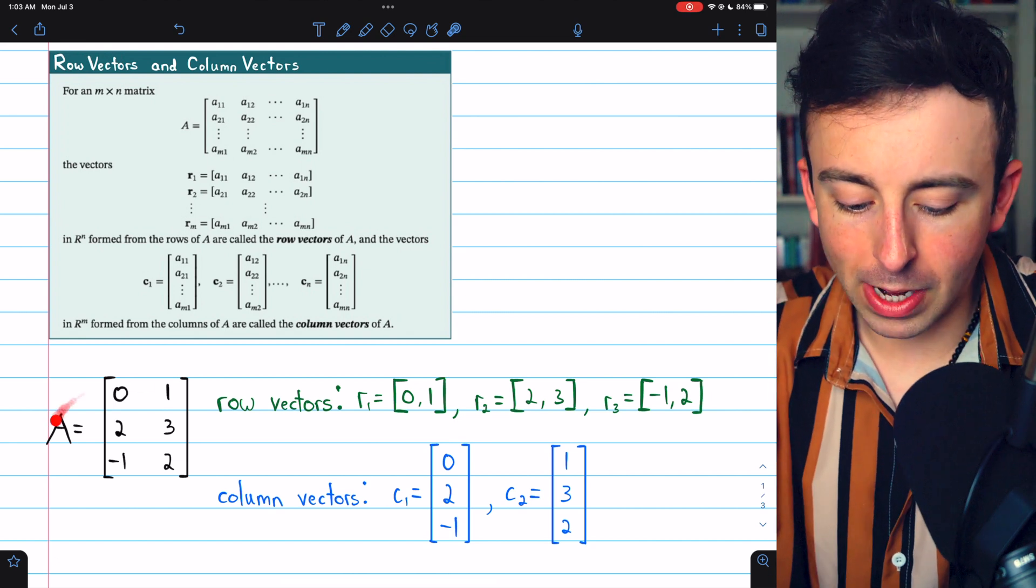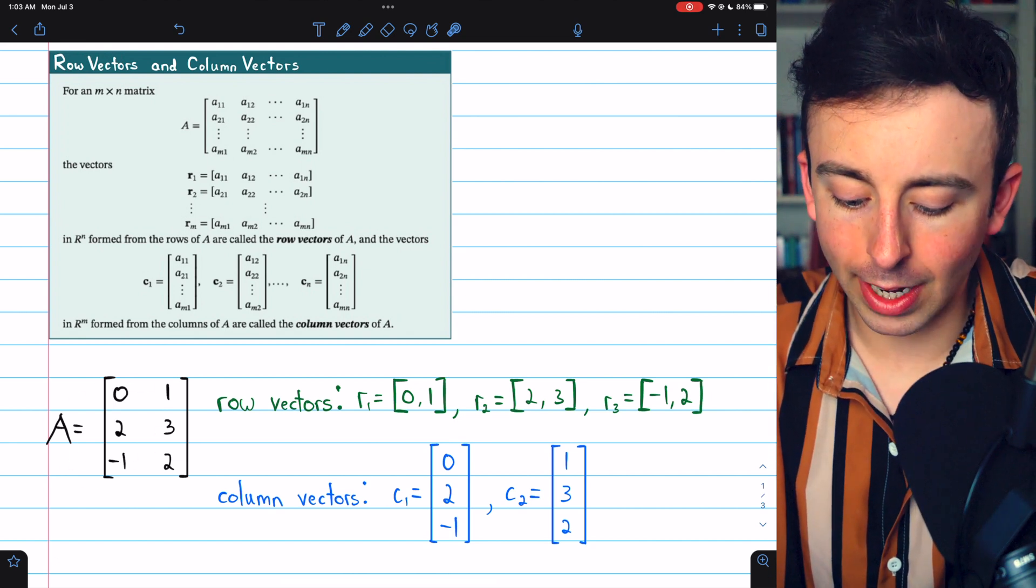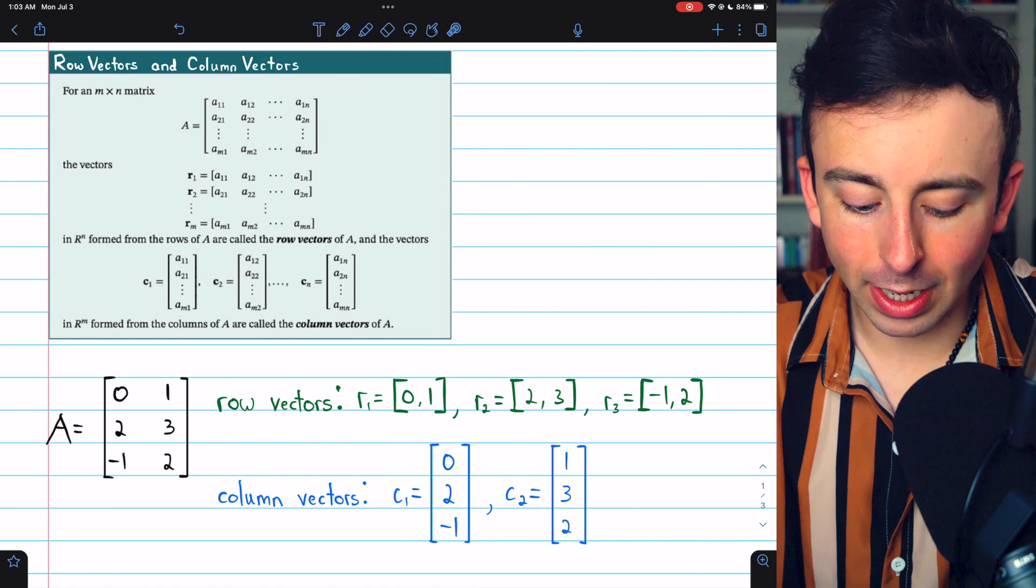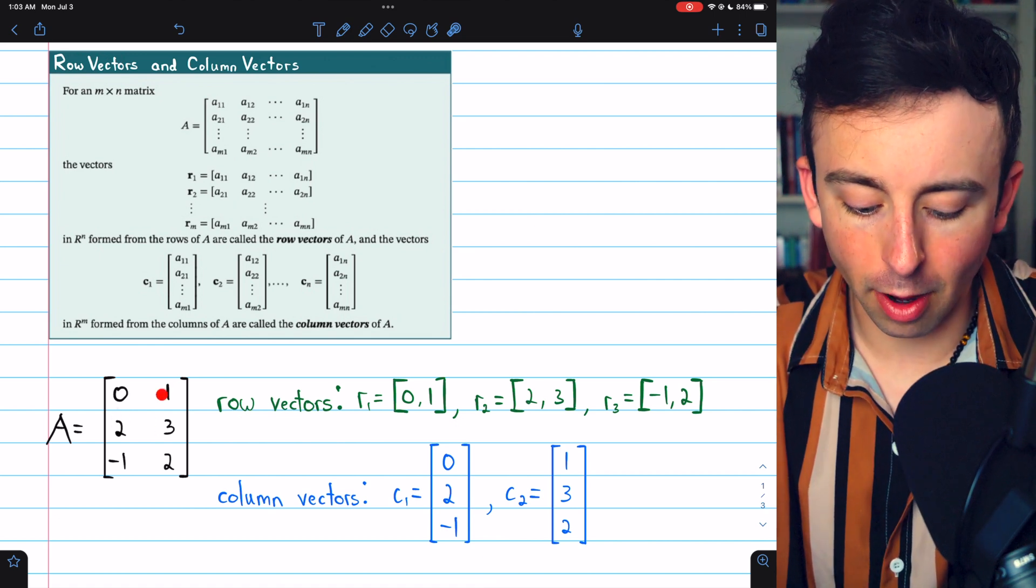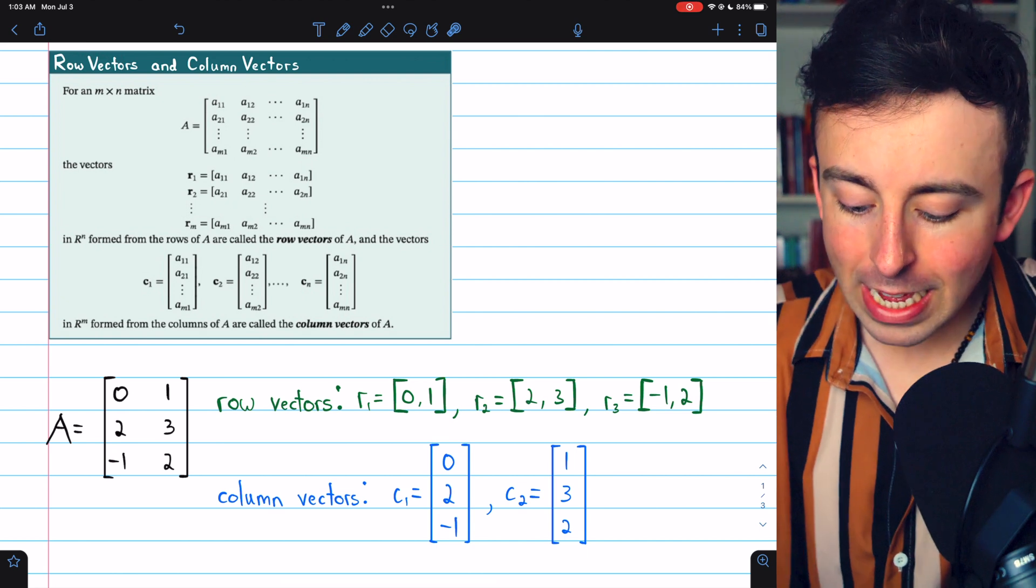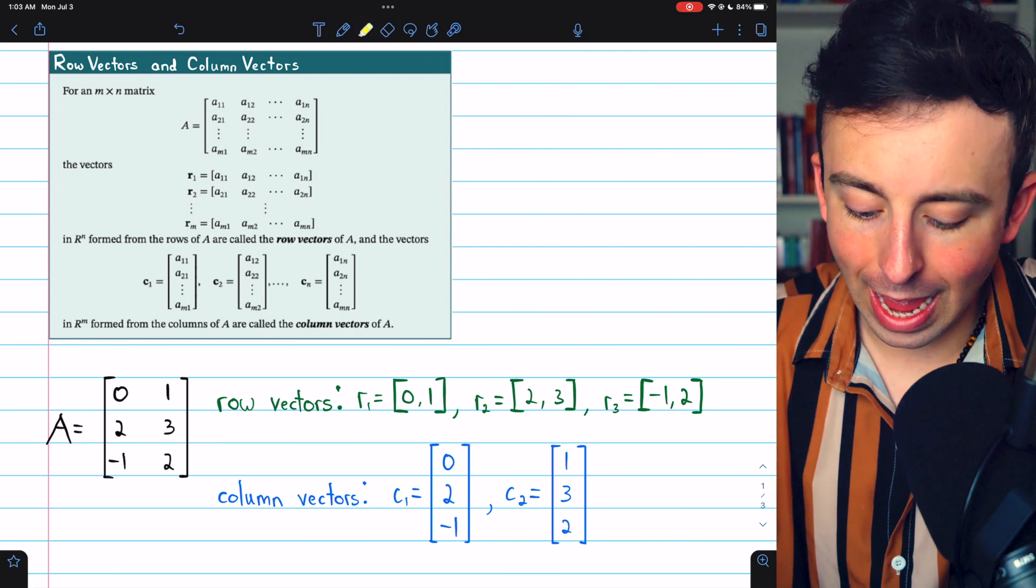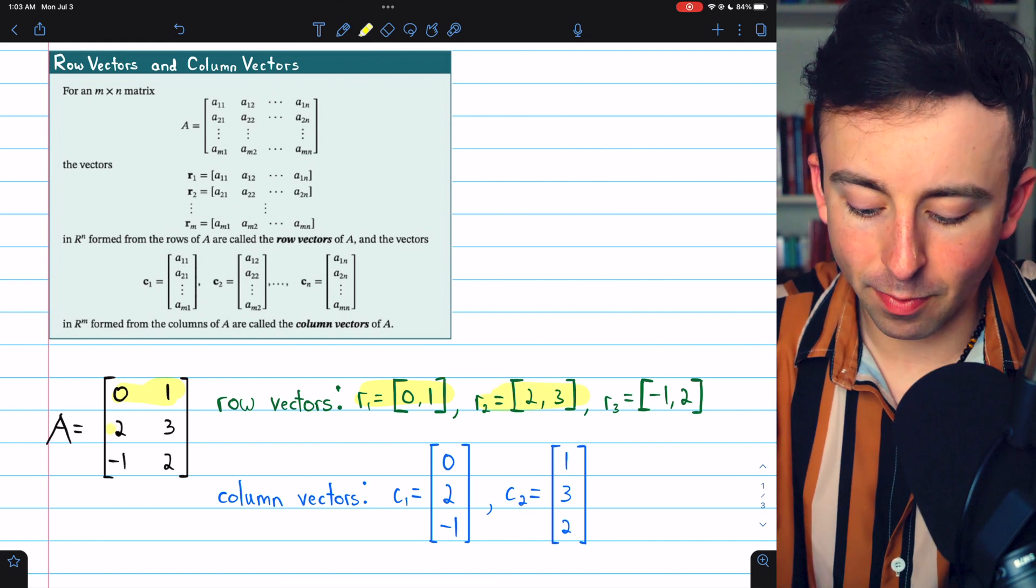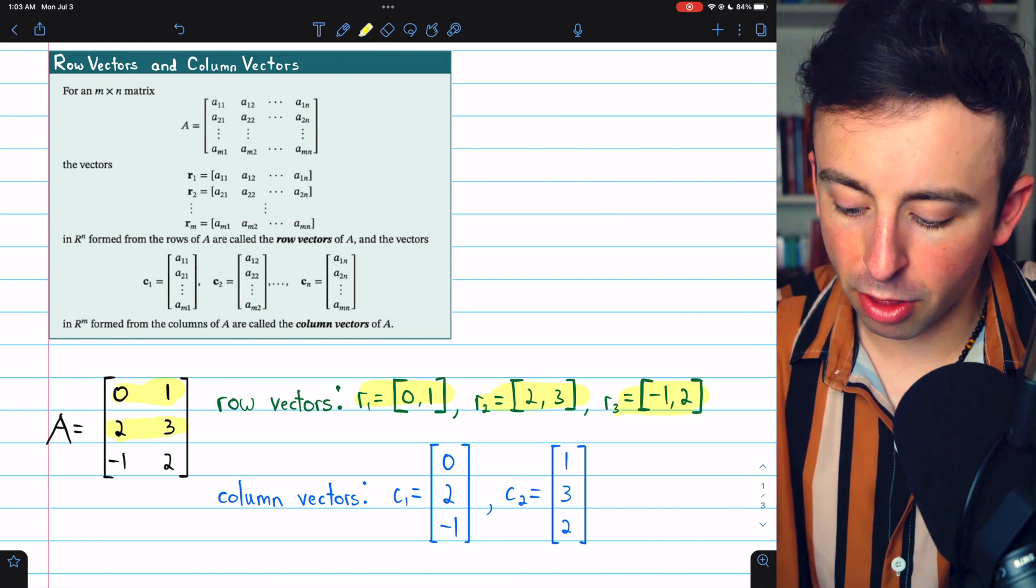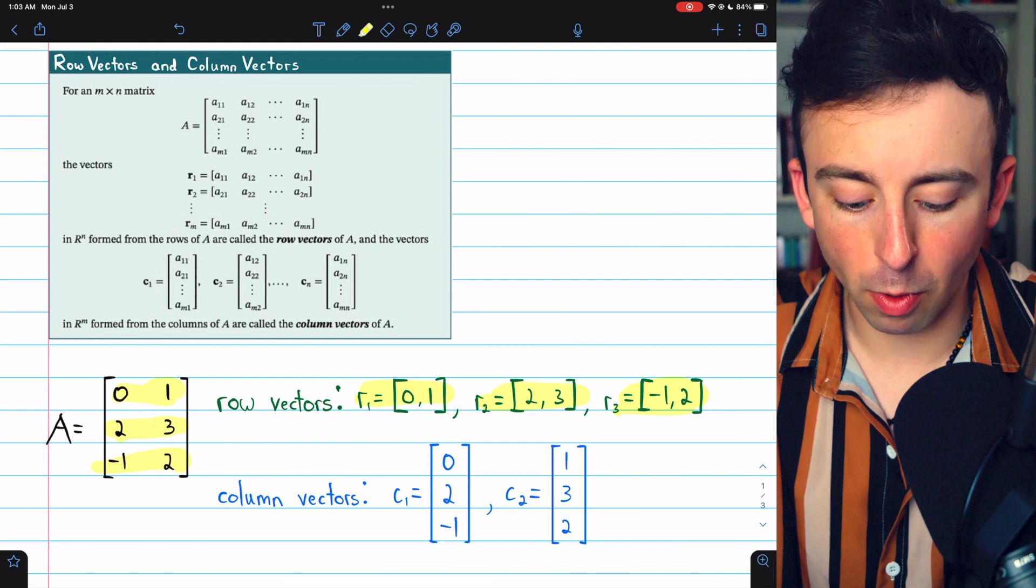Here's a quick example. Here's a matrix A. It is 3 by 2, so each row consists of 2 entries, and each column consists of 3 entries. Here are the row vectors of A: R1, this first row, R2, the vector for the second row, and R3, the vector for the third row.